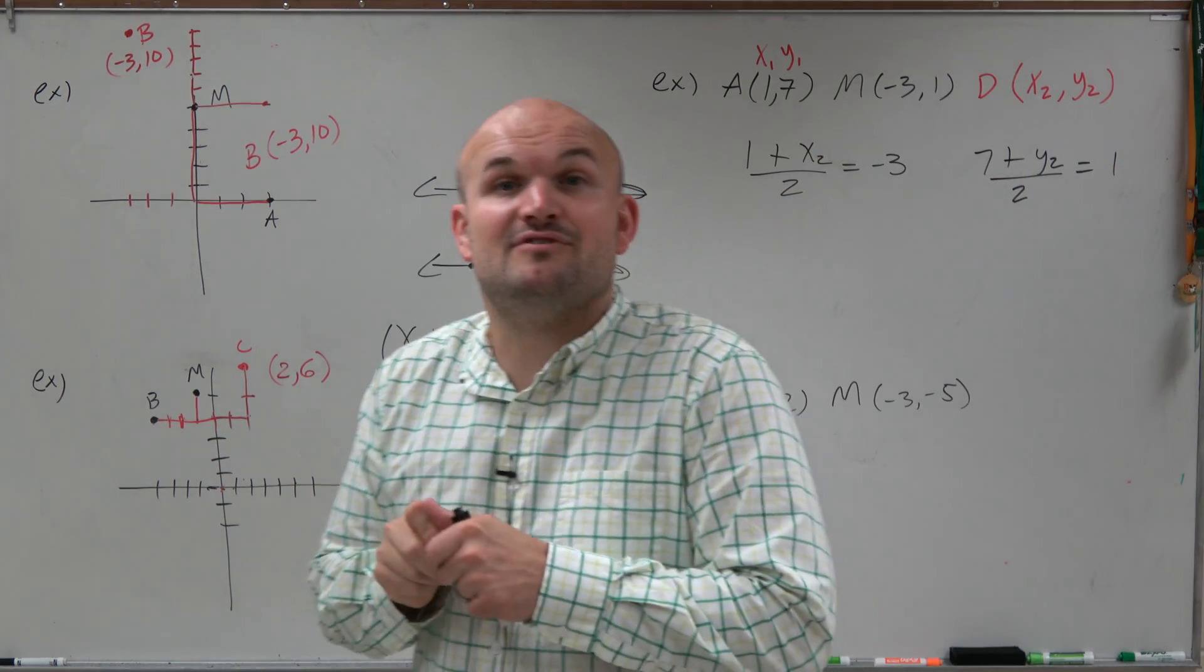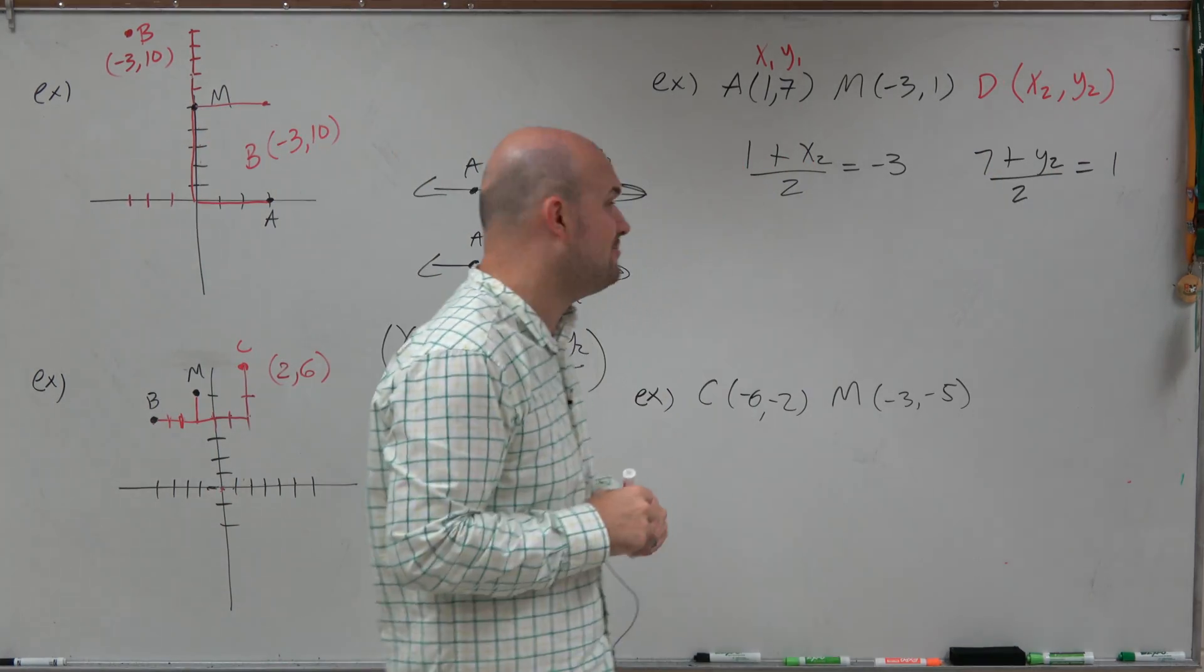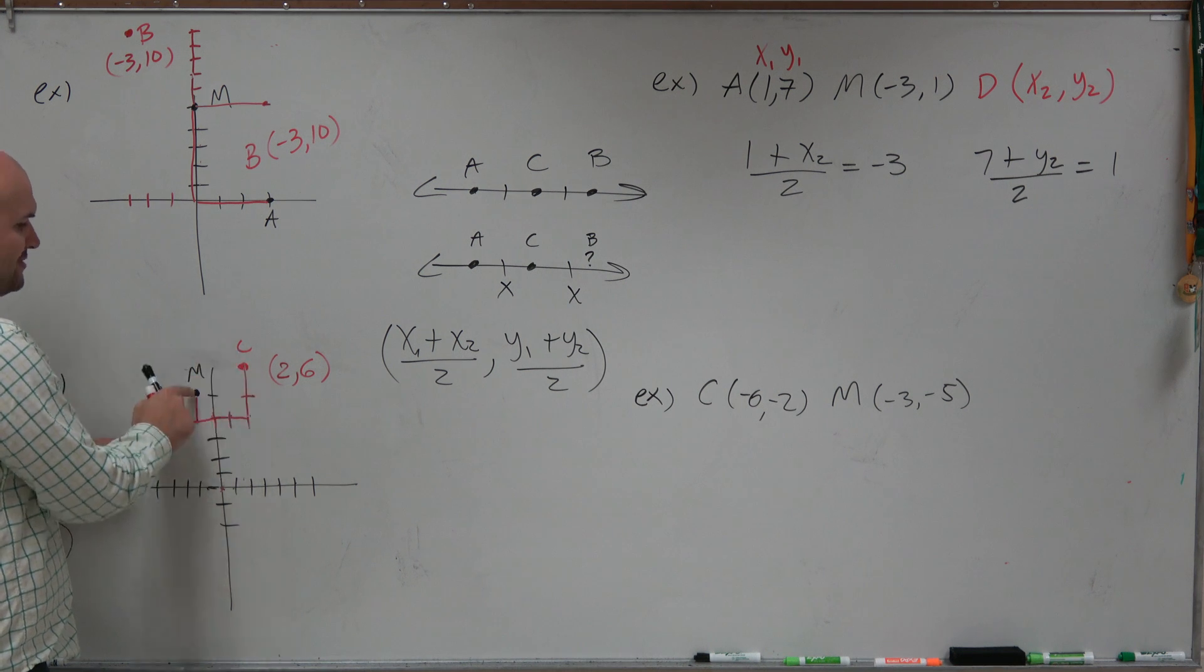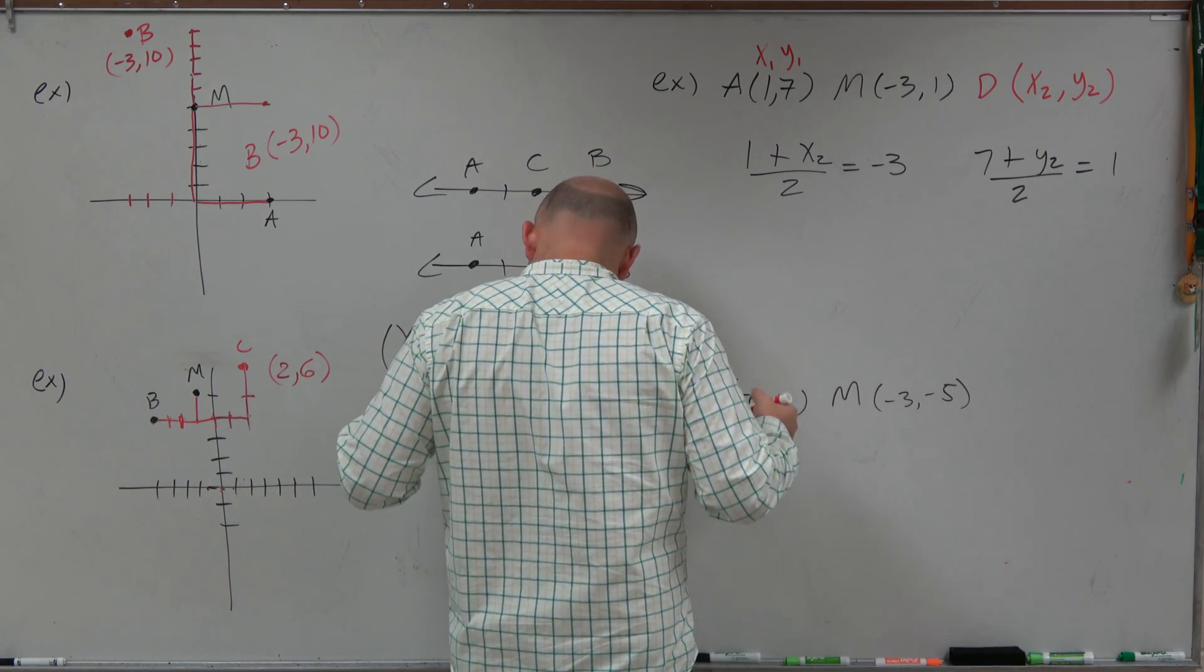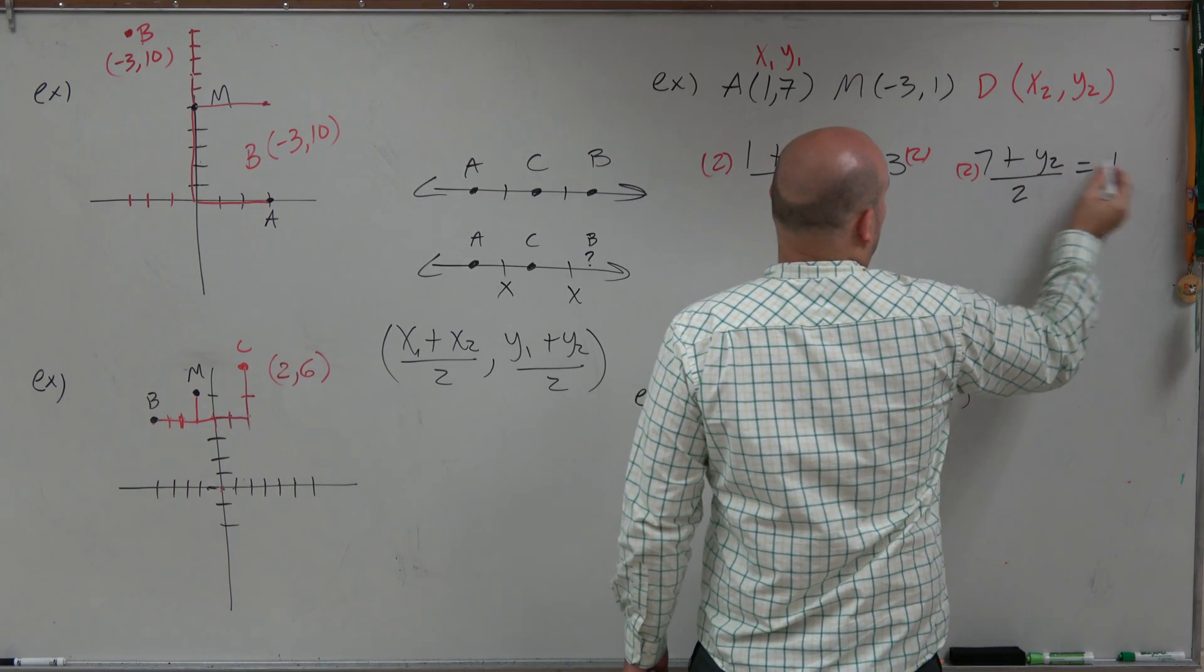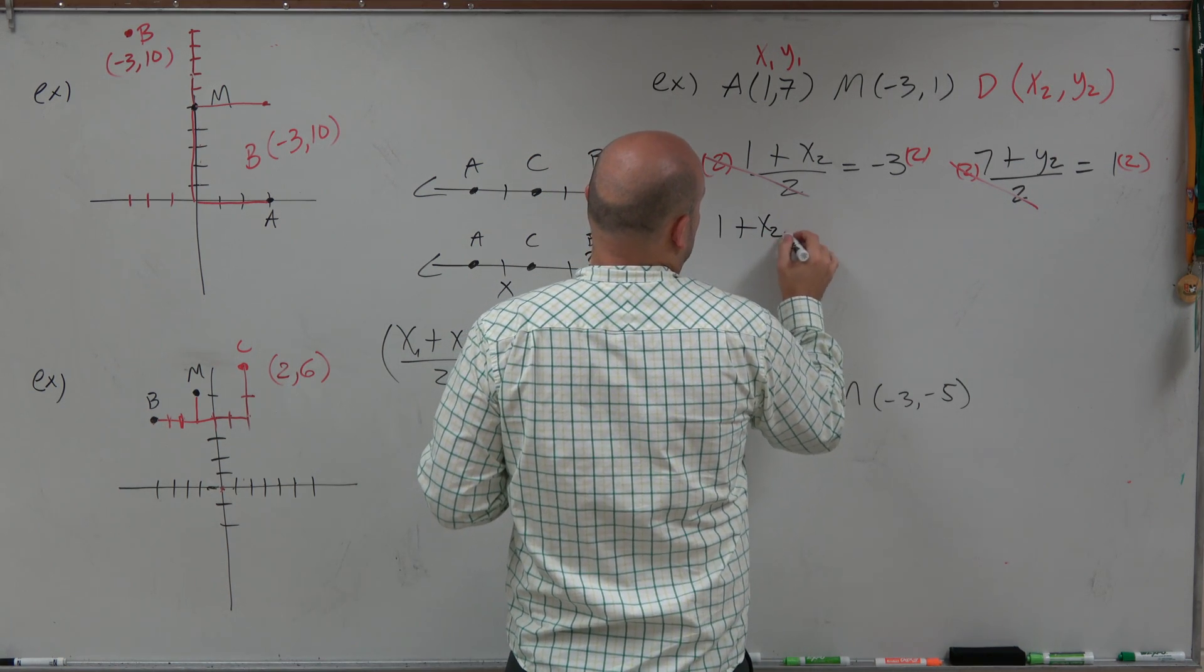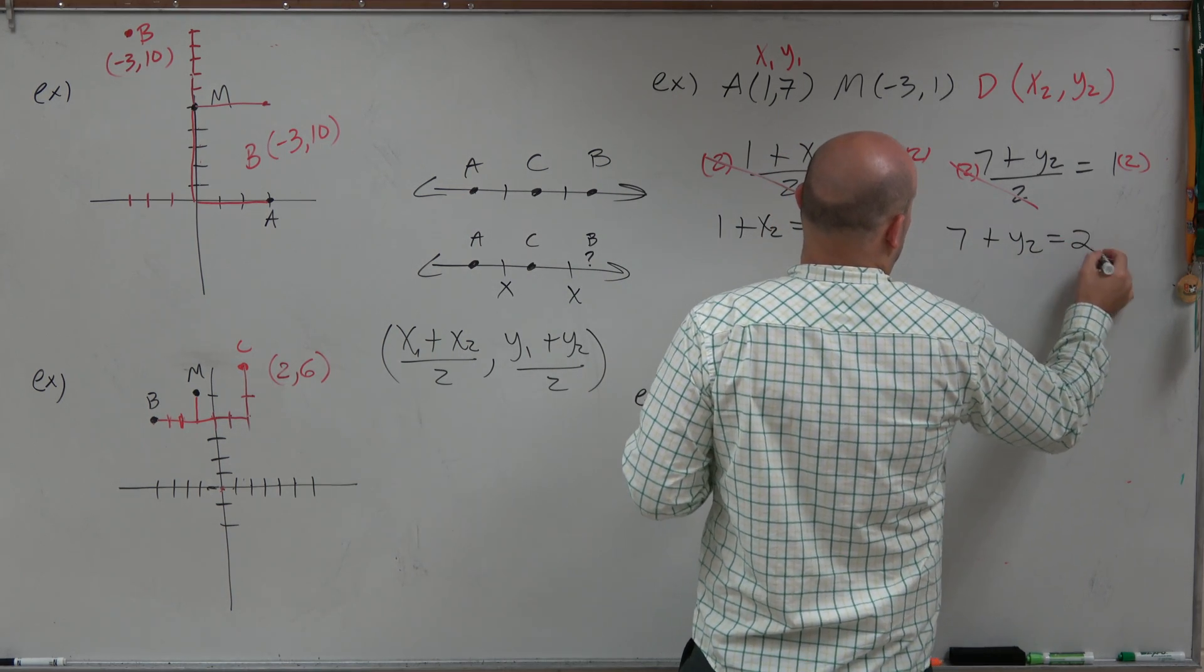Now, ladies and gentlemen, I just need to use inverse operations to solve for my x2 and my y2, which is going to give me my other endpoint. I'm just finding the coordinates of this point. I know that the coordinates of here plus here divided by 2 is going to equal M, or my midpoint. To undo dividing by 2, I'll multiply by 2 on both sides. I'll have to do that for both of them. The 2's divide out using my inverse operations. So I'll be left with 1 plus x2 equals negative 6. And over here, I have 7 plus y2 equals positive 2.